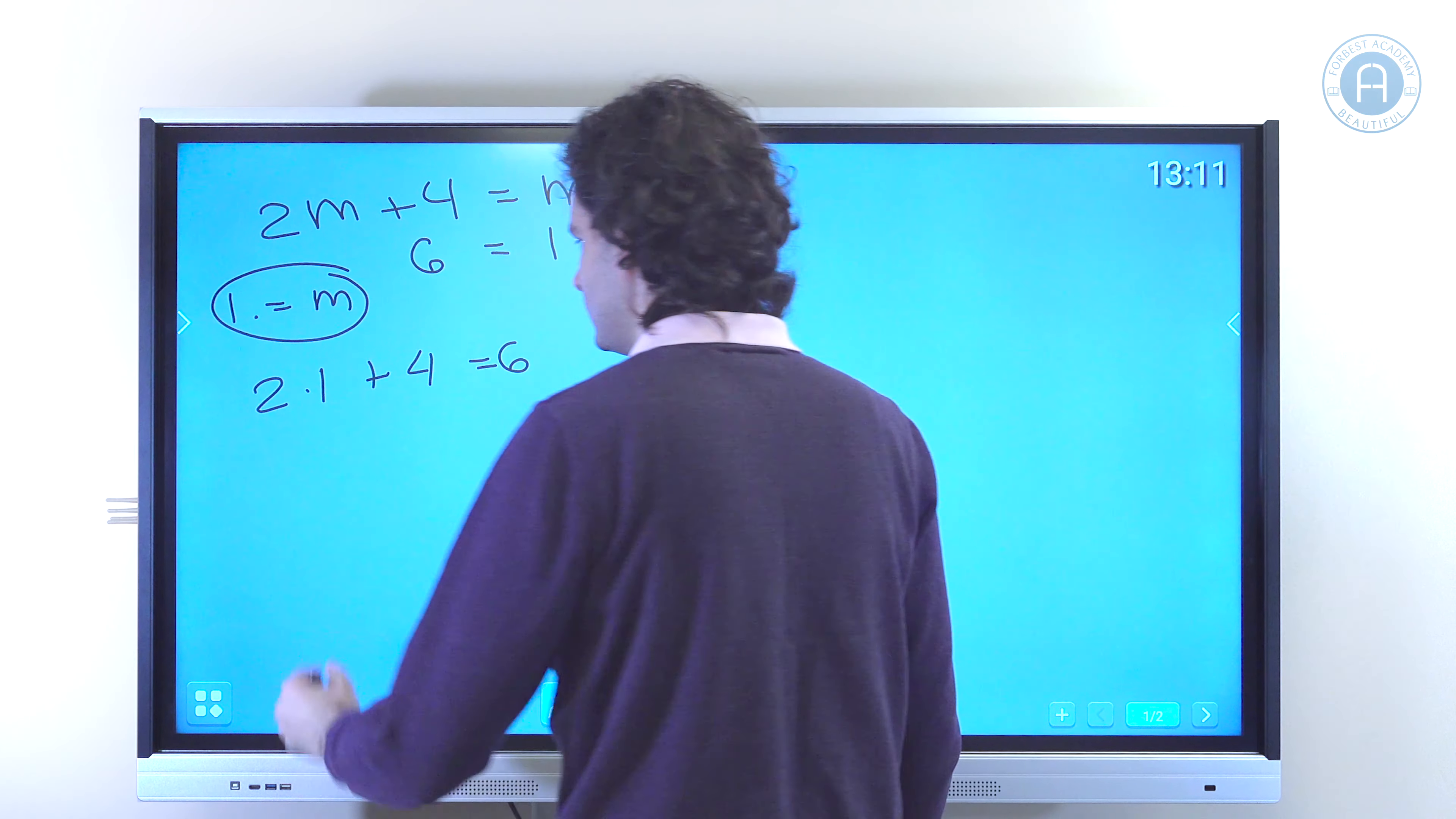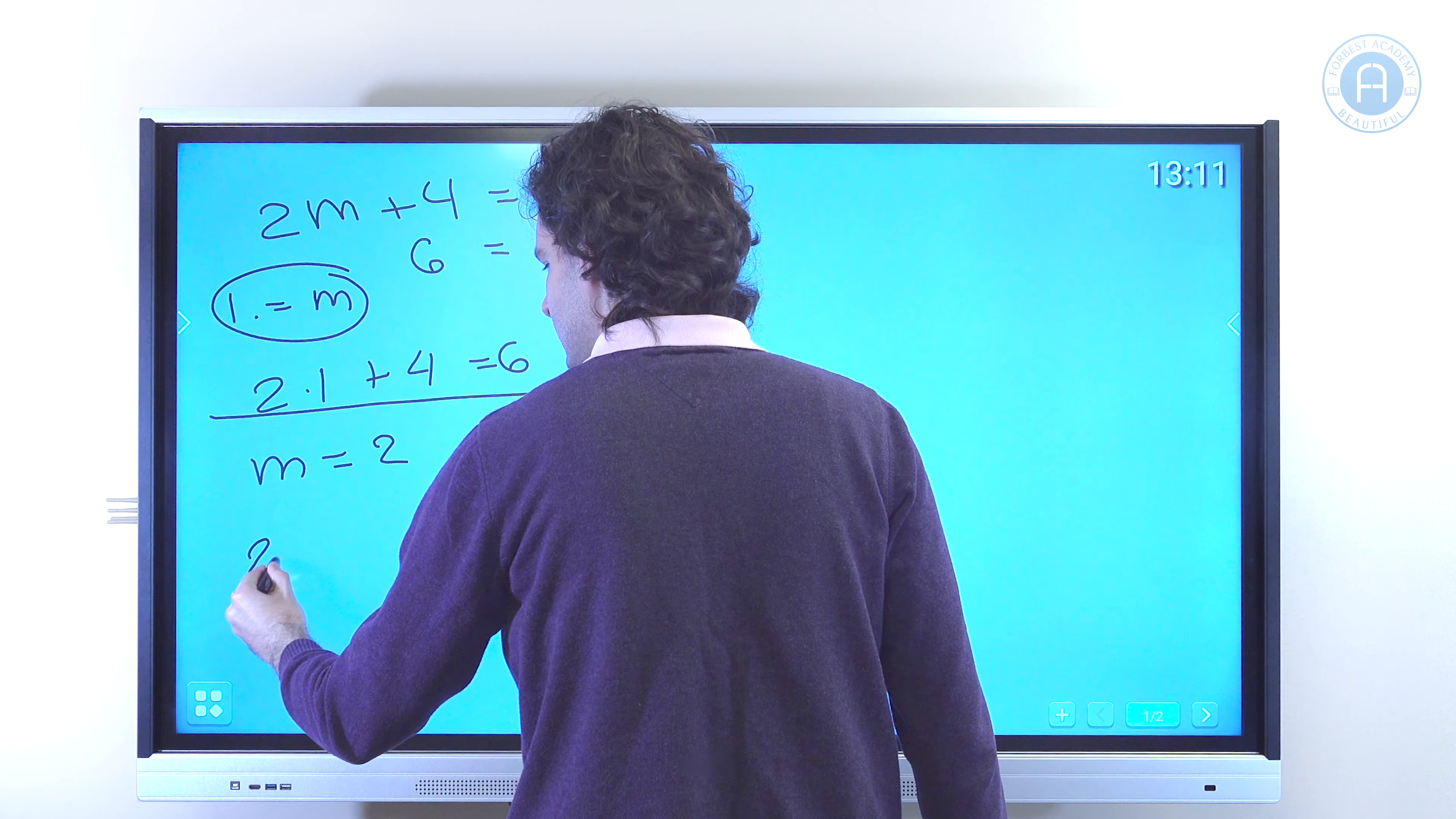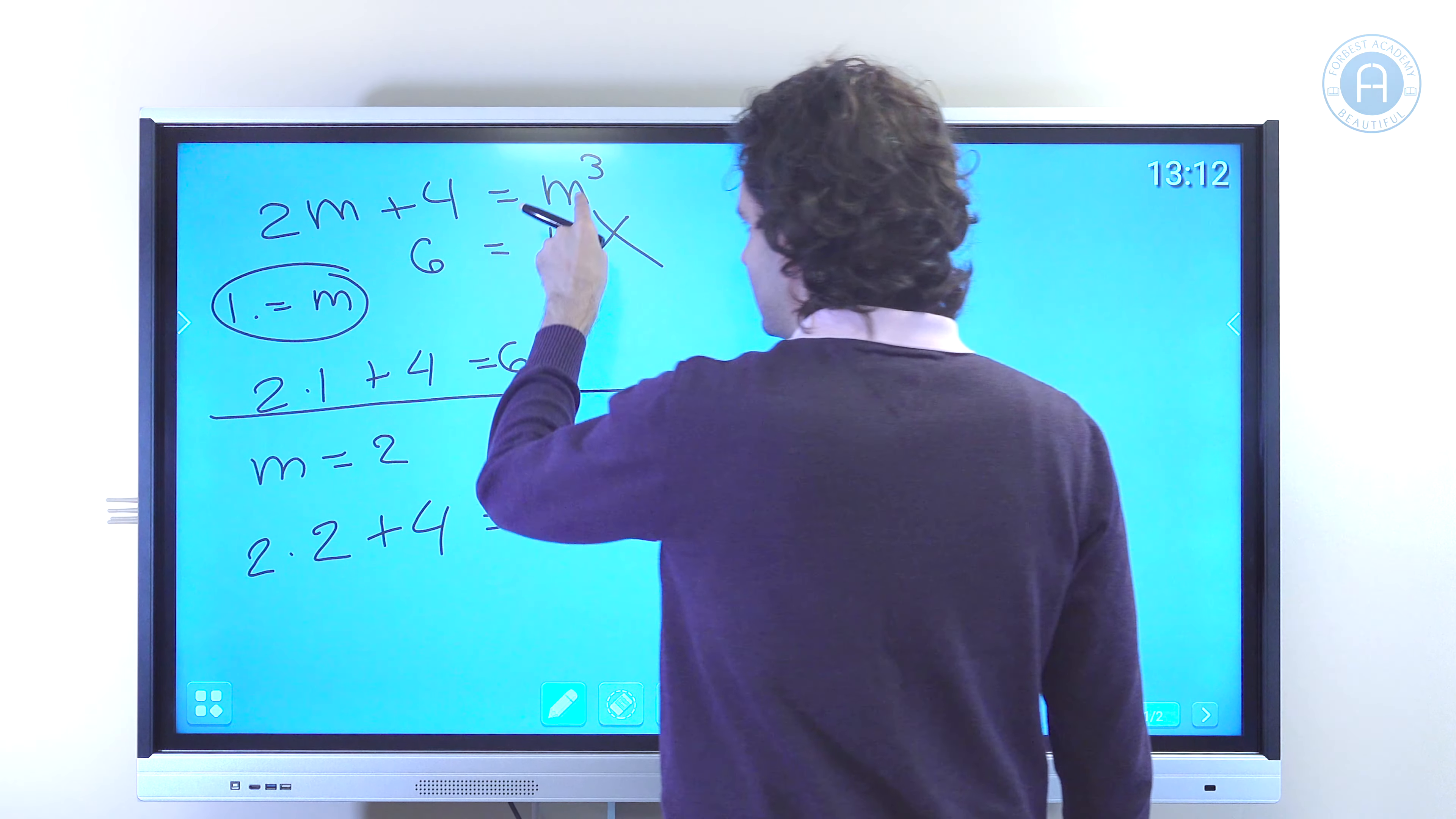All right, moving on. Let's consider the second choice, which is m equals 2. Well, if m equals 2, the left hand side is going to be 2 times 2 plus 4, which is the same thing as 4 plus 4, which is 8.